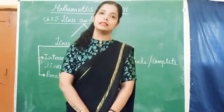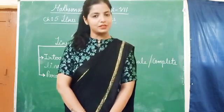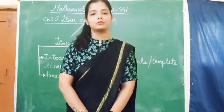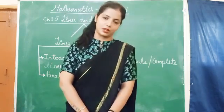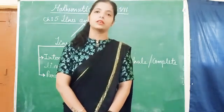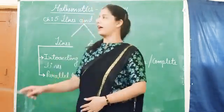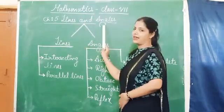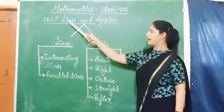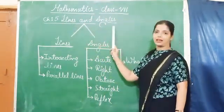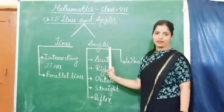The chapter number 1: integers. Chapter number 2: fractions and decimals. Chapter number 3: data handling. And chapter number 4: simple equations. Now I am here with a new chapter — chapter number 5, lines and angles. As you can see, the chapter 5, lines and angles, is made up of two words: lines and angles.